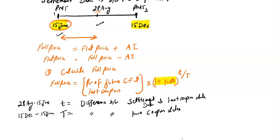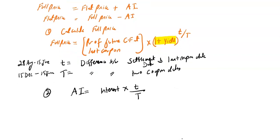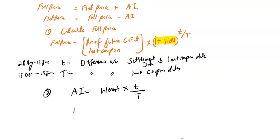So the first step is to calculate the full price. The second step is to calculate the accrued interest: that is the coupon amount (PMT) multiplied by lowercase t over uppercase T, where lowercase t is the difference between the last coupon and the settlement date, and uppercase T is the difference between the two coupon dates. The last step is to calculate the flat price: flat price equals full price minus accrued interest.